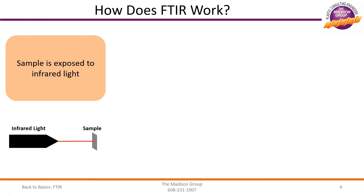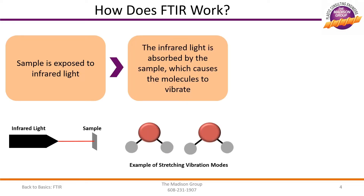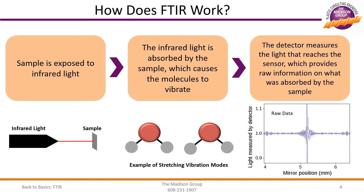So how does the equipment produce these results? In a very simple sense, the sample is exposed to an infrared light that repeats the exposure over various frequency ranges. Upon exposure to the broad spectrum energy, some of the wavelengths of light are absorbed into the material, which causes the molecules to move. The conversion of infrared light into molecular motion absorbs some of the applied energy while some goes through or past the sample. The energy that makes it through is recorded by the detector, which after some mathematical processing provides the final results.